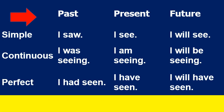Dear students, one table is given using the verb 'see.' In simple past: 'I saw.' In past continuous: 'I was seeing.' In past perfect: 'I had seen.' In simple present: 'I see.' In present continuous: 'I am seeing.' In present perfect: 'I have seen.' In simple future: 'I will see.' In future continuous: 'I will be seeing.' In future perfect: 'I will have seen.' This example will help you to solve any of the exercises, so kindly make note of it.